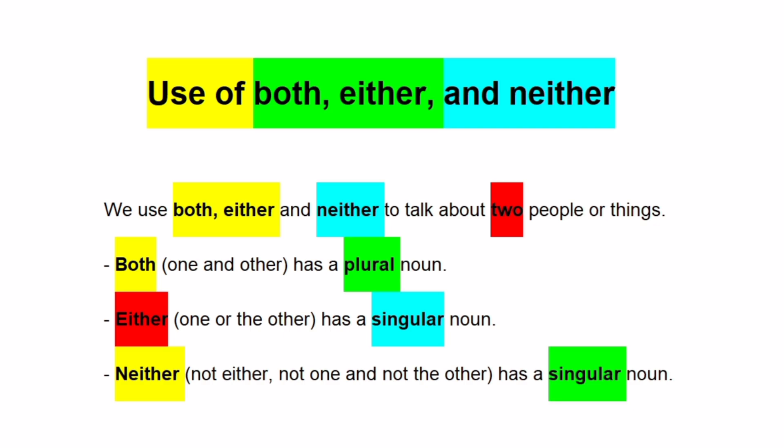So let's get started. We use both, either, and neither to talk about two people or things. Both, one and other, has a plural noun. Either, one or the other, has a singular noun. Neither, not either, not one and not the other, has a singular noun.